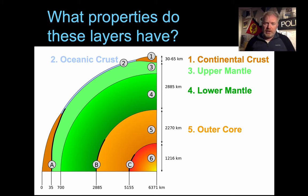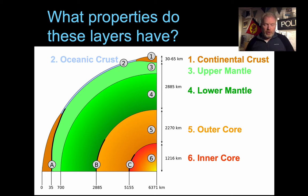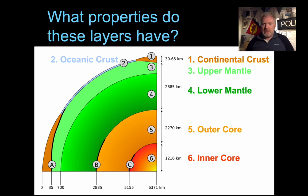The final layer is the inner core, right down at the centre of the Earth. The inner core is also made of iron, and its density is higher again — from 12.8 down to 13.1.